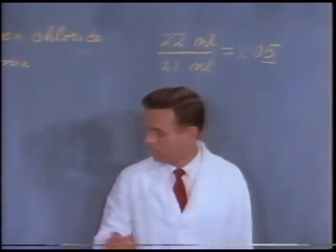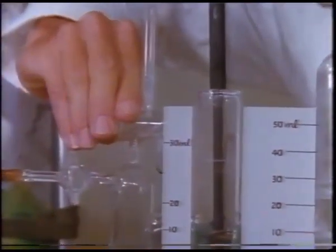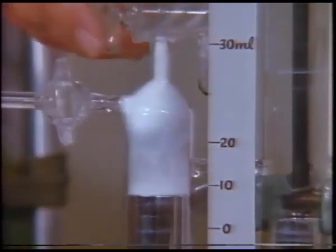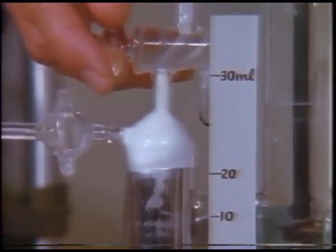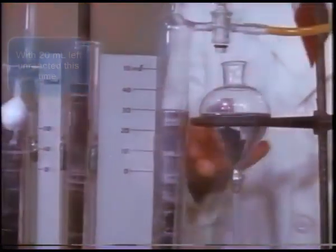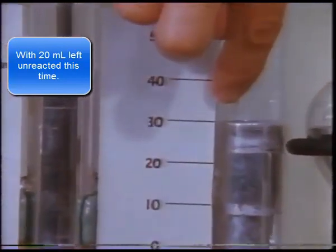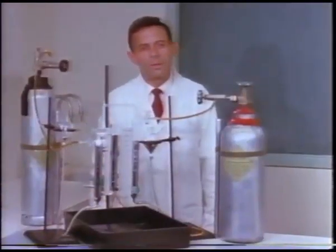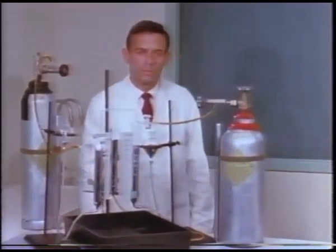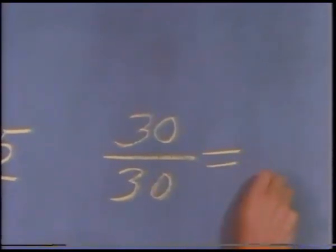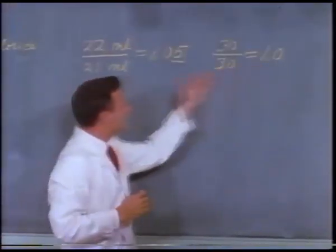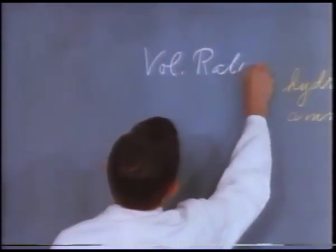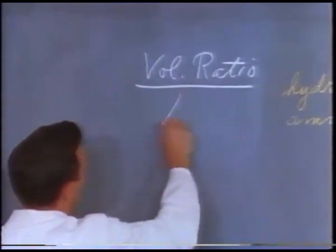Now let's repeat that measurement. The apparatus has been refilled and the levels of the two gases again adjusted to zero. This time let's wait until all of the ammonia is consumed. After adjusting the leveling bulb on the right, we can see how much hydrogen chloride was needed. This time 30 milliliters of hydrogen chloride combined with 30 milliliters of ammonia. The ratio of these volumes is 1.0. These results are in agreement within experimental uncertainty — the volume ratio is, on the average, 1.0.